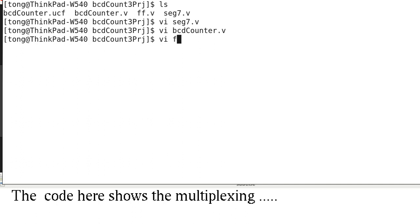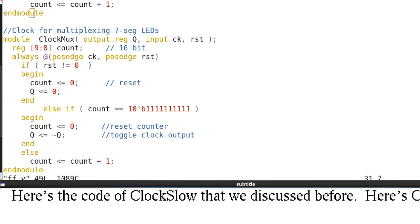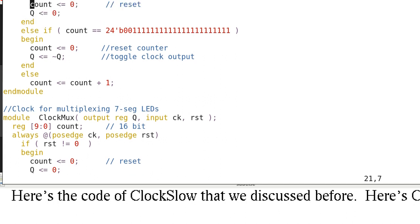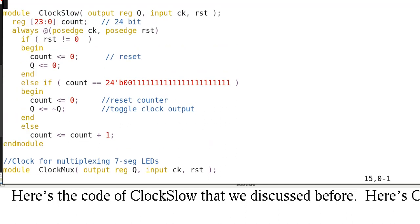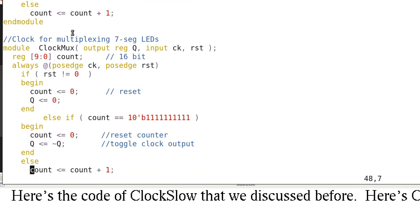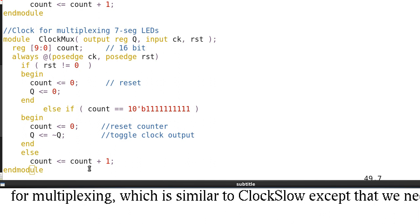Now here's the code for multiplexing. We have discussed this before. This is the code for clock slow that we discussed. And here's the clock mux for multiplexing. It's very similar to clock slow except that it is faster.